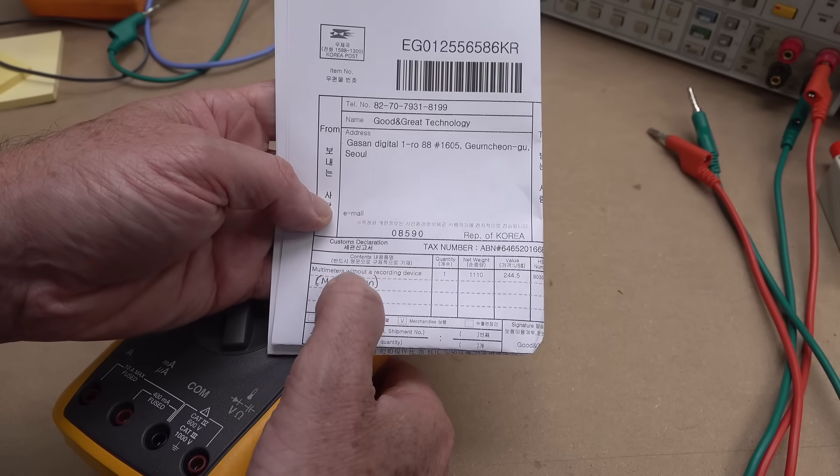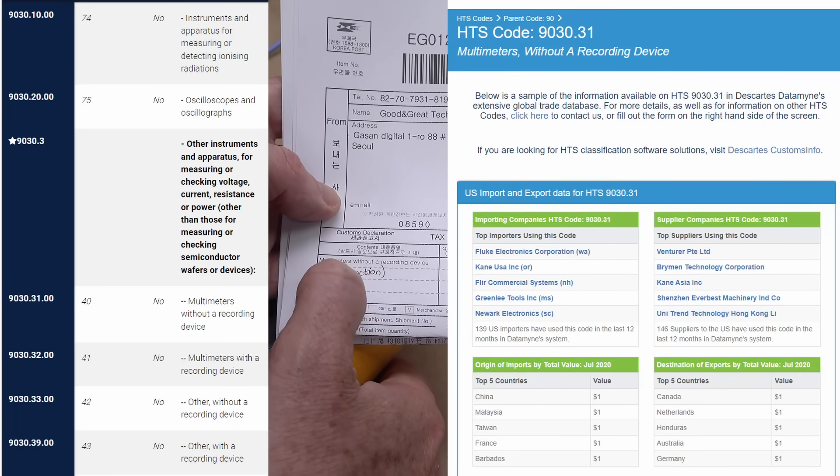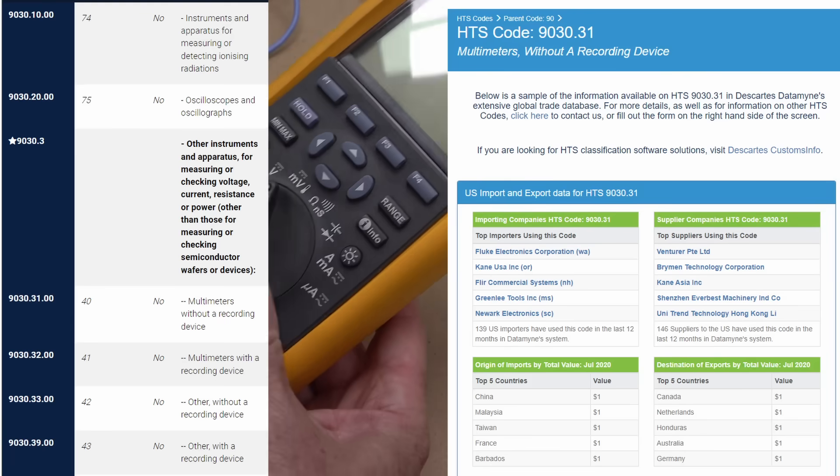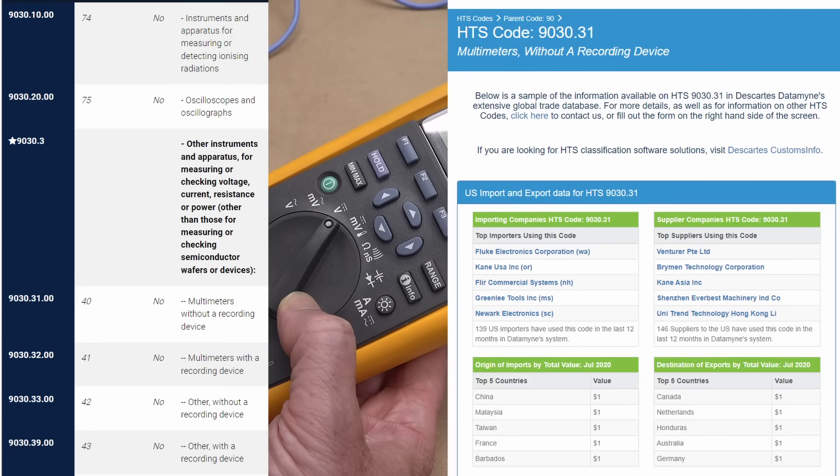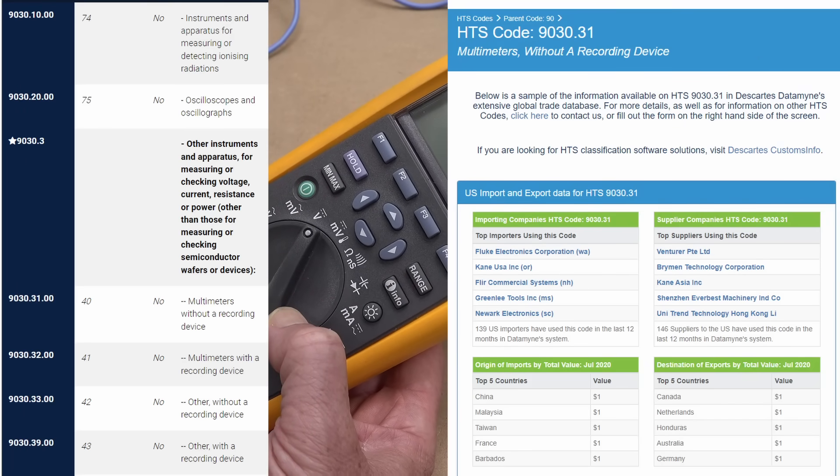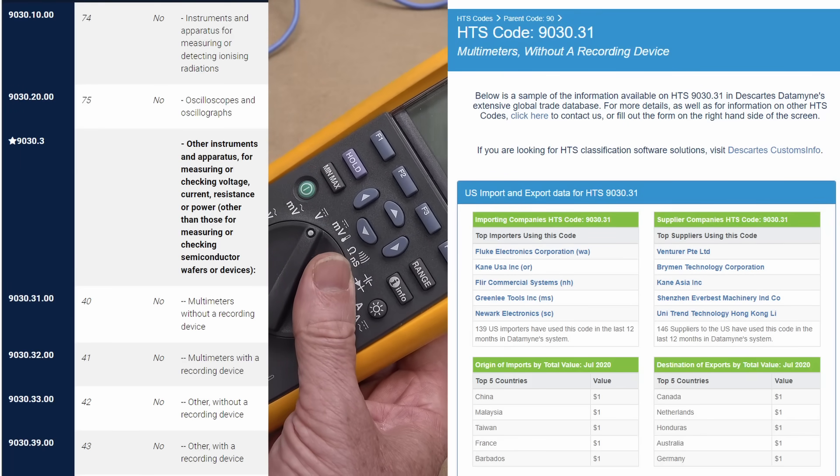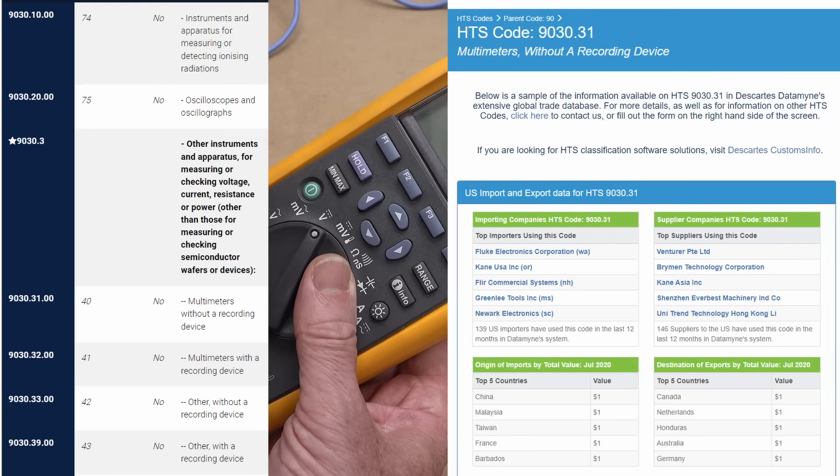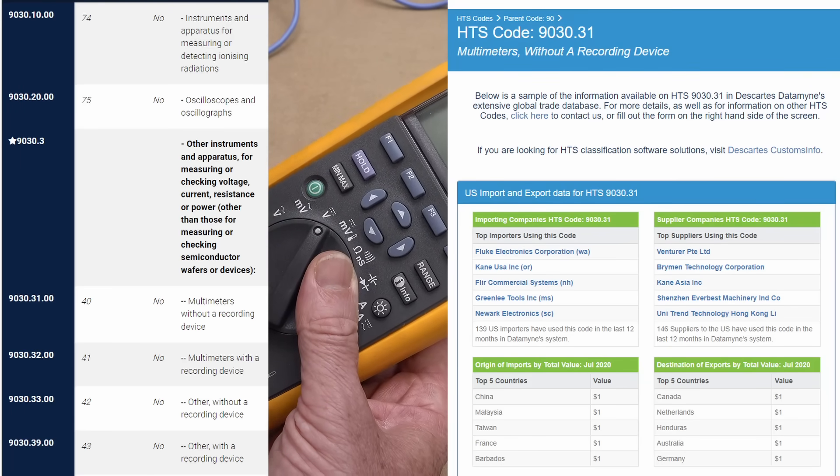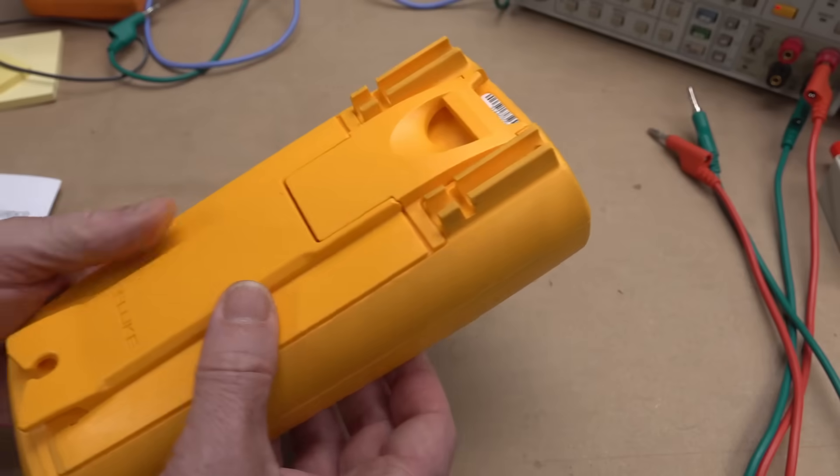If you're wondering what that means, that's actually a category definition that you have to put in for multimeters for customs purposes. If it has a recording device, which this one actually does, this meter goes into a different customs category. It has a different code, 90-30 dash 31 or something, and must be categorized different than a regular multimeter that doesn't have recording capability.